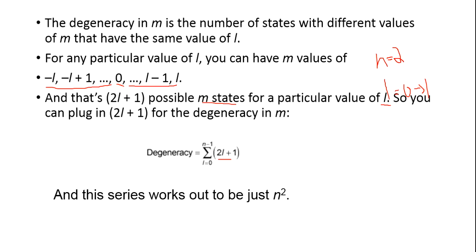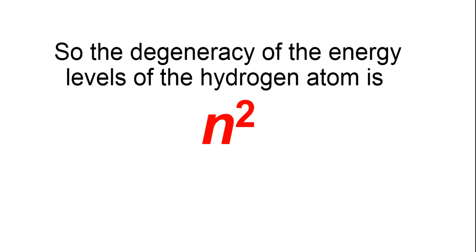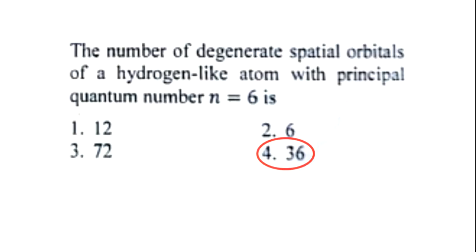This series works out to be n squared. So the degeneracy of the energy levels of a hydrogen atom is n squared. The answer to our question is option 4 — it is 36.